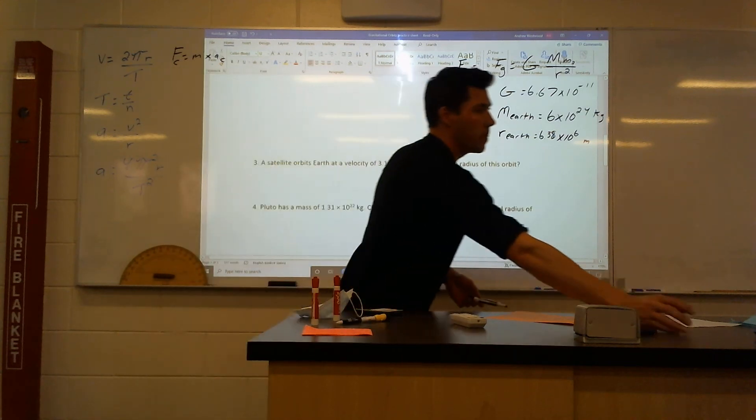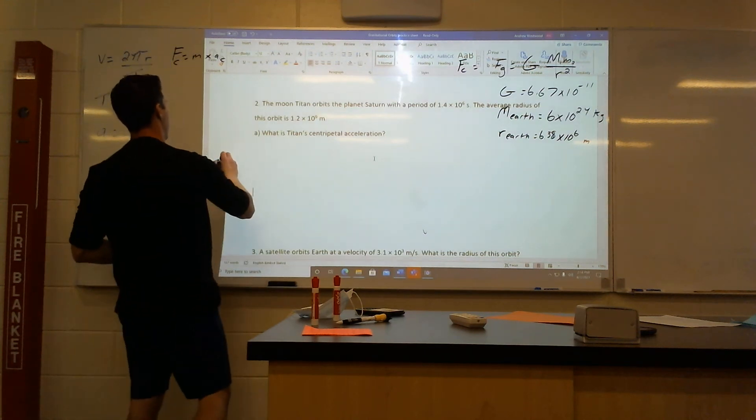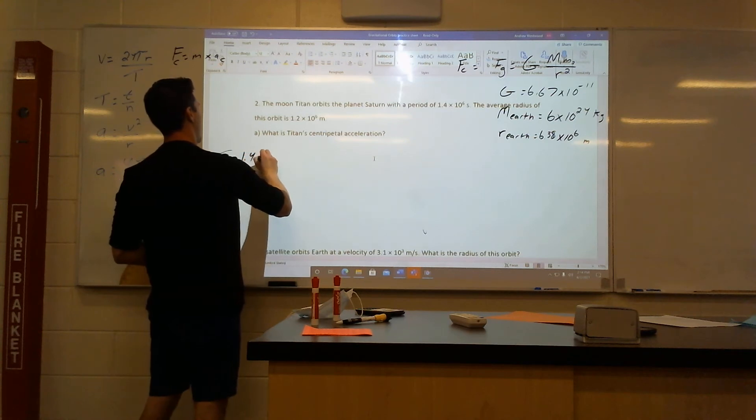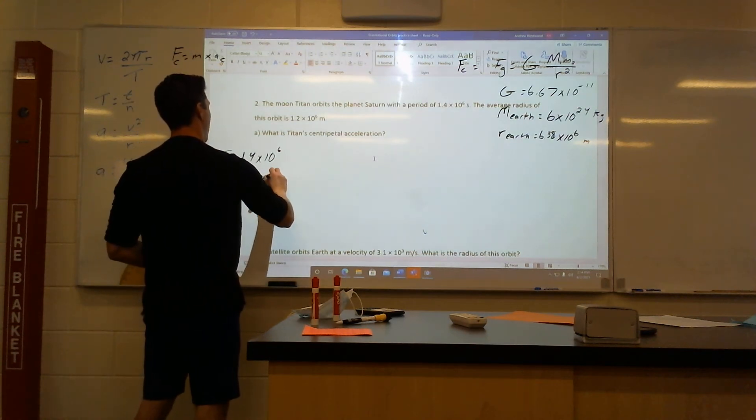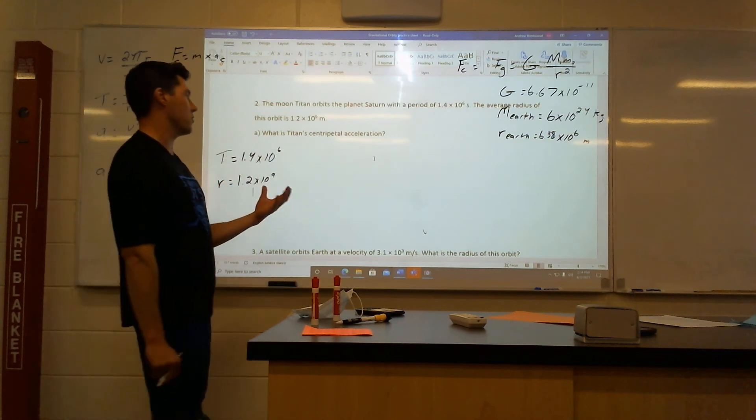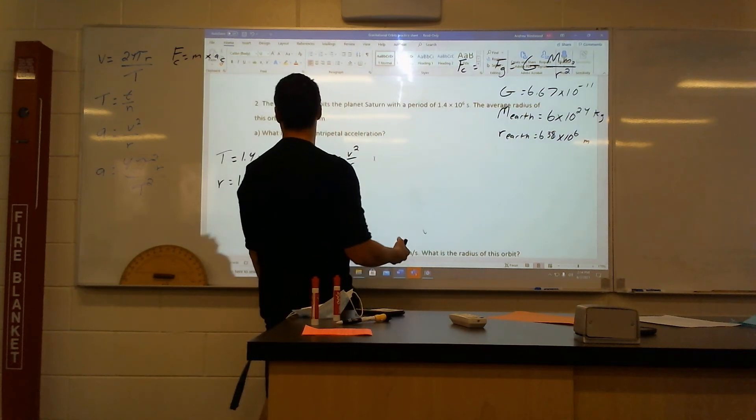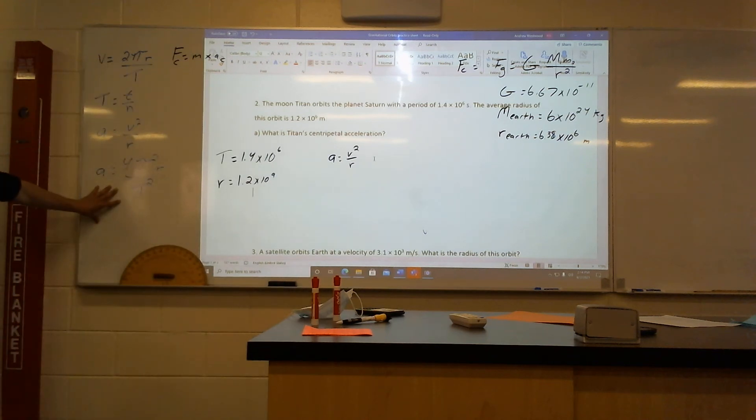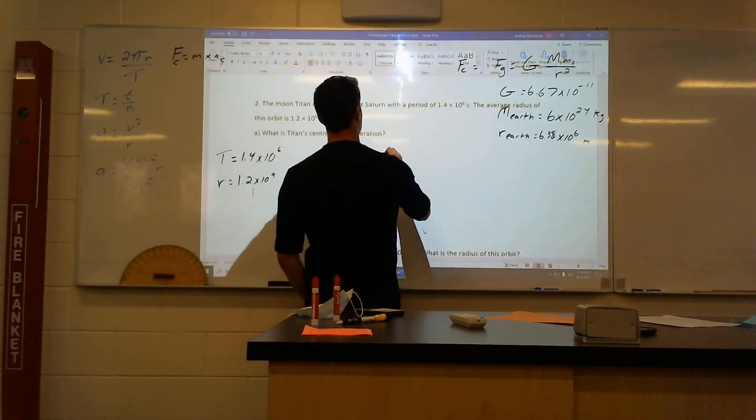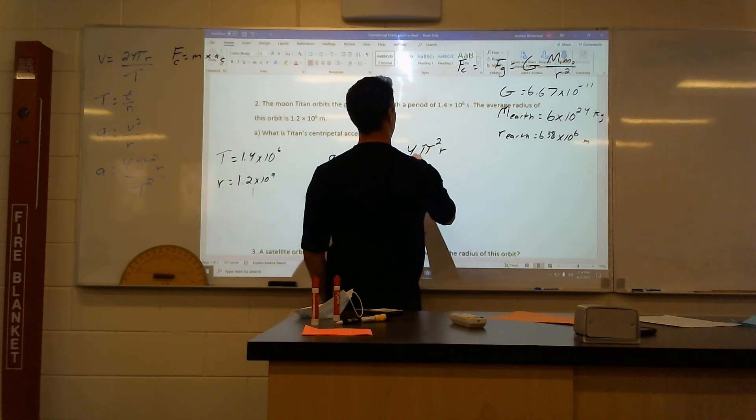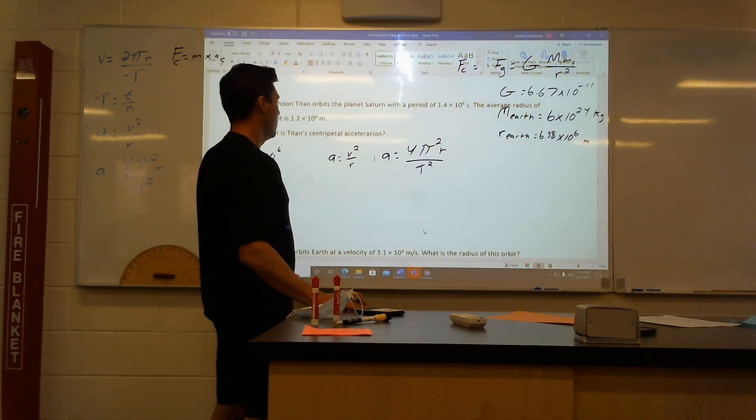It says, the moon, Titan, orbits the planet Saturn with a period, a period of 1.4 times 10 to the 6. The average radius is 1.2 times 10 to the 9. What is Titan's centripetal acceleration? So, again, we look at acceleration as being two things. Acceleration equals V squared over R. Or, you also do have from last week, it's right here. 4 pi squared R over period squared. So, we also have this one. Acceleration equals 4 pi squared radius over T squared. This is the one we're going to use to figure out the acceleration of this actual object. So, let's go through that.